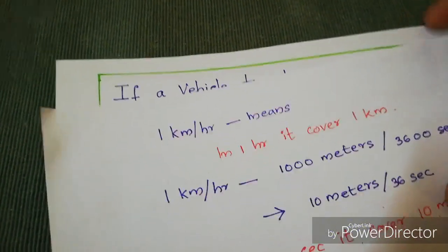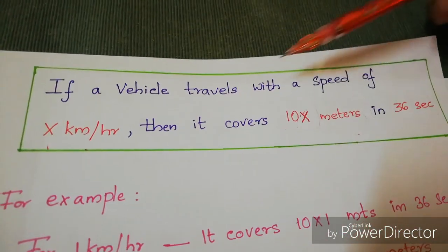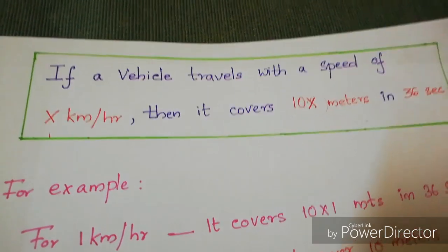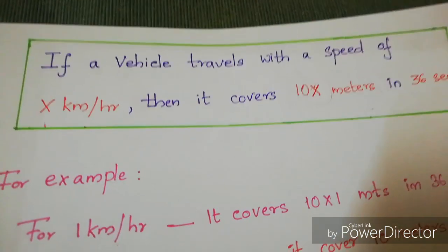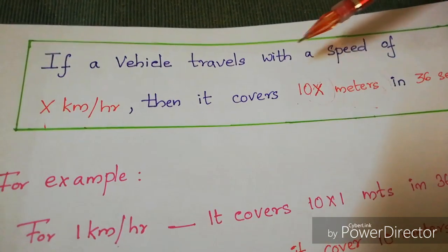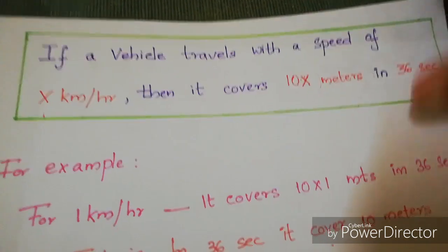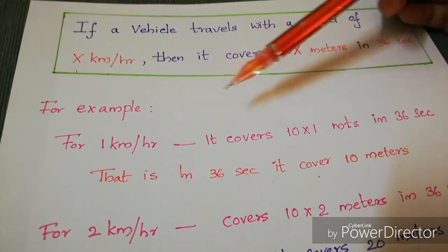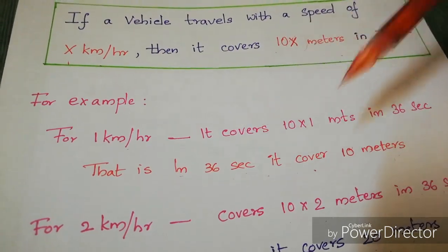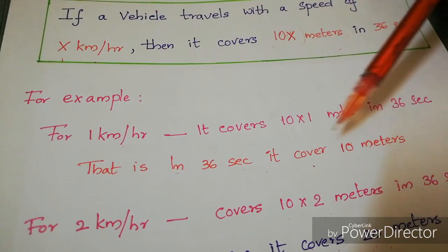Before solving this, we have to keep in mind one shortcut trick. If a vehicle travels with a speed of x kilometers per hour, then it covers 10x meters in 36 seconds. Here, if the speed is given in kilometers per hour, we convert it to meters per second. For example, for 1 kilometer per hour, it covers 10 × 1 = 10 meters in 36 seconds.